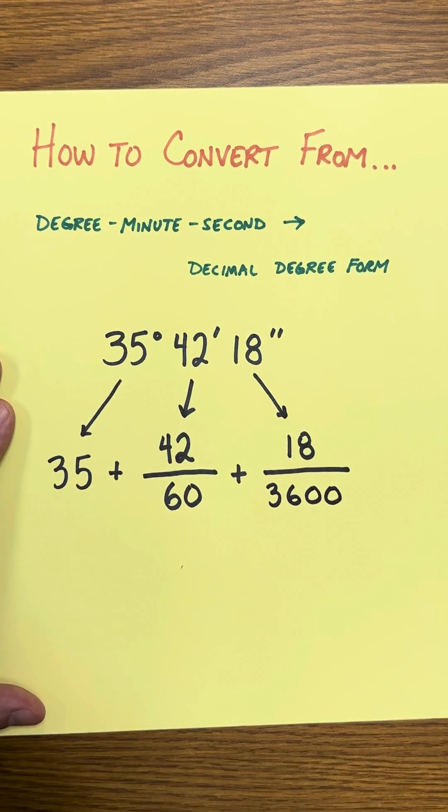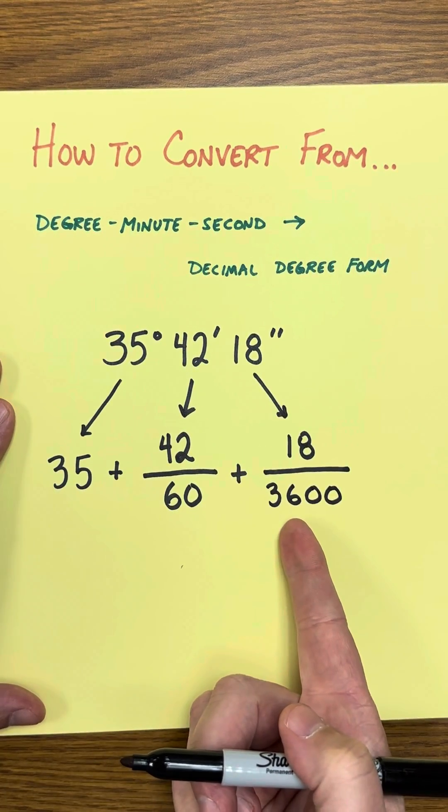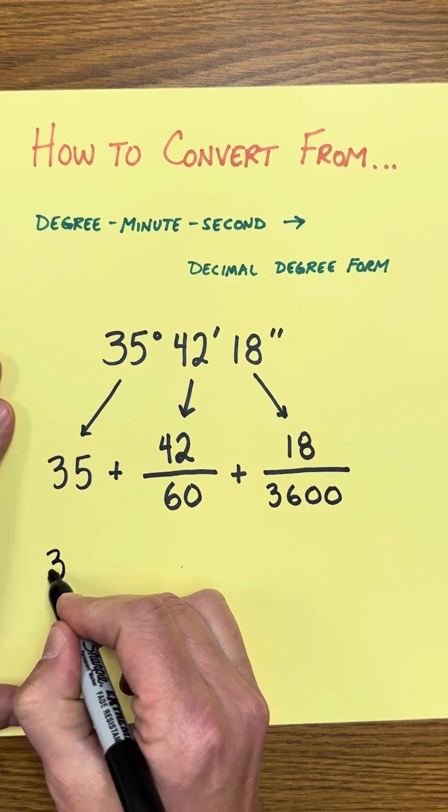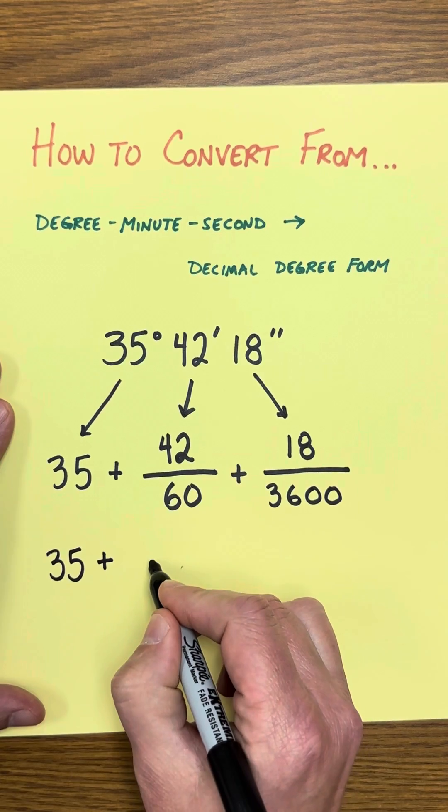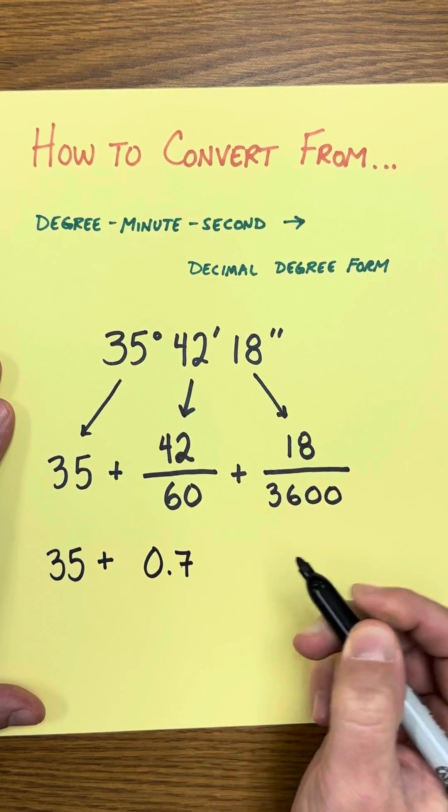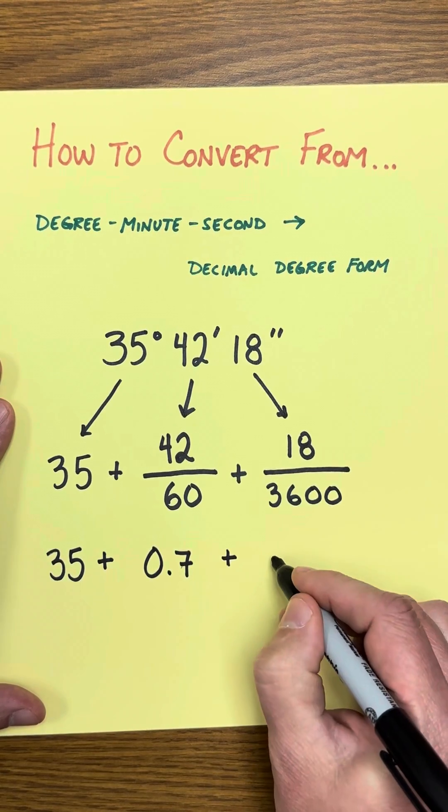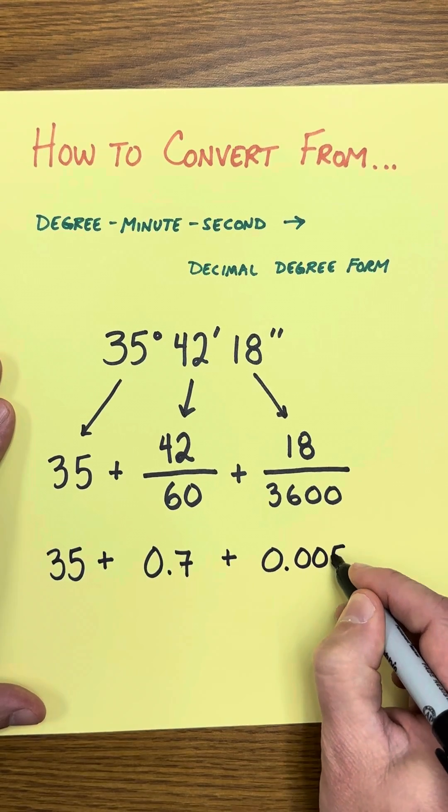Now, you're probably going to need your calculator to do these fractions into decimals. So if you have a calculator, you can get that out to follow along. I have 35 plus 42 divided by 60 is 0.7 or 7 tenths. Plus 18 divided by 3,600 is 0.005. And now if we add these numbers together, we get 35.705 degrees.